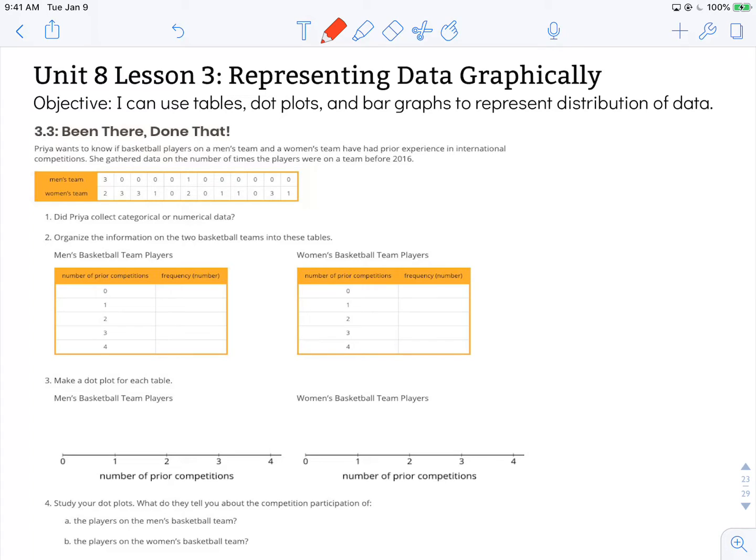We're going to be looking specifically at frequency tables and dot plots with this particular activity. This is 3.3, been there, done that. Priya wants to know if basketball players on a men's team and a women's team have had prior experience in international competitions. She gathered data on the number of times the players were on a team before 2016. You can see her data summarized right here.